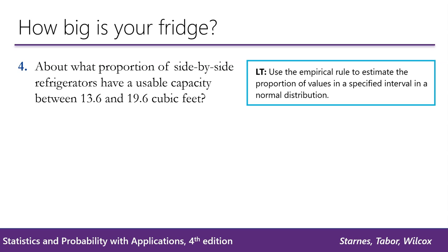Question 4. About what proportion of side-by-side refrigerators have a usable capacity between 13.6 and 19.6 cubic feet?